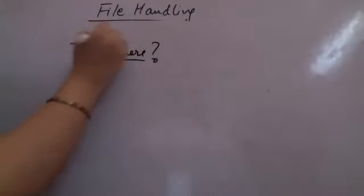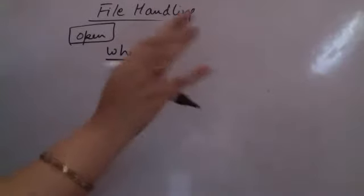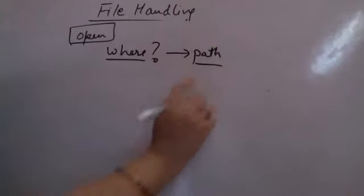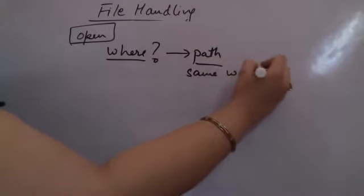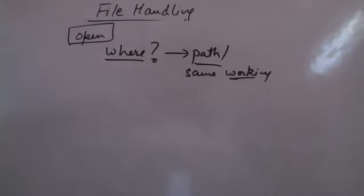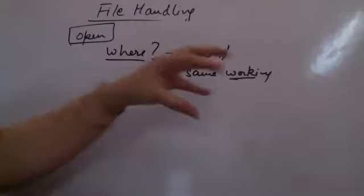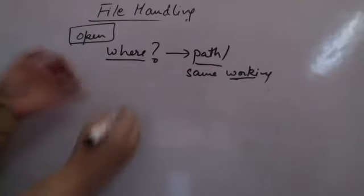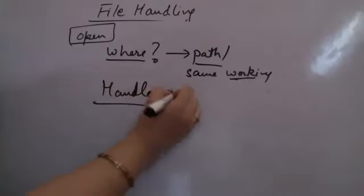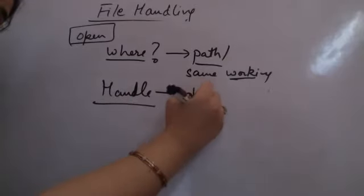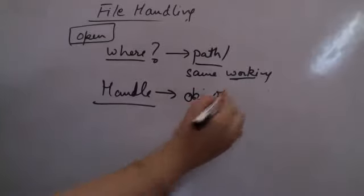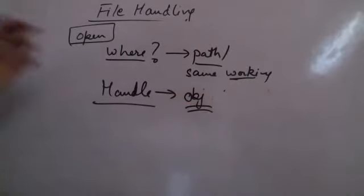Two things you need to understand: how do you open a file? First you need to know where the file is — you want the exact path, either in the same working directory or the full path. Once you know where the file is, you pick it up with a handle. This handle is an object of some class — either ifstream or ofstream — which acts as a handle to that file.